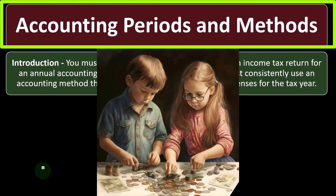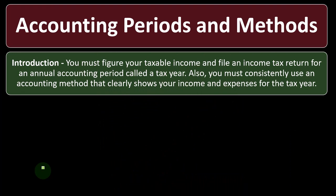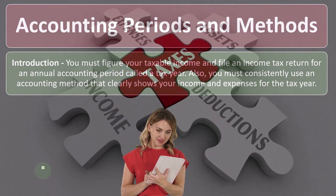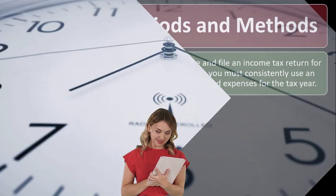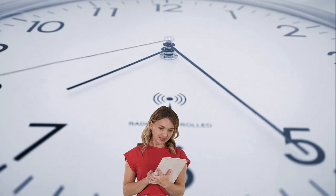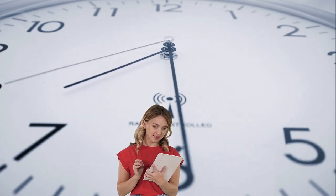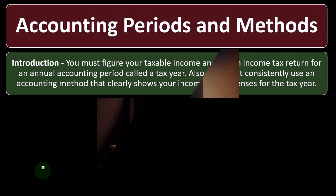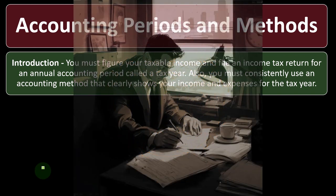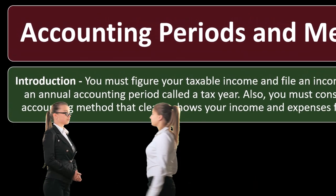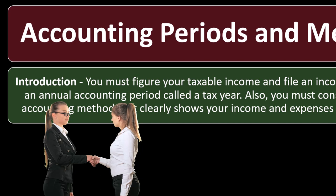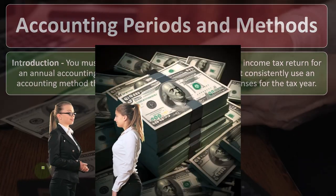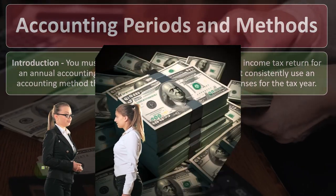Let's talk about accounting periods and methods introduction. You must figure your taxable income and file an income tax return for an annual accounting period called a tax year. When we think about accounting periods, we're thinking about the time frame — a 12-month time frame. When we get into the methods, we talk about the two major methods: the accrual method and a cash-based method. We also ask the question: could there be a hybrid between the two? Because those two methods are not mirror opposites of each other, and we could have accounting methods that combine elements of both.